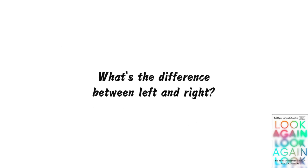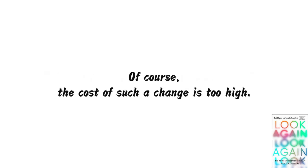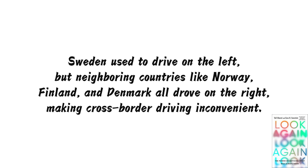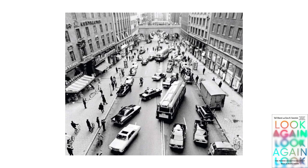Why not unify and have all countries drive on the right side? Of course, the cost of such a change is too high — but such a change has indeed happened before. Sweden used to drive on the left, but neighboring countries like Norway, Finland, and Denmark all drove on the right, making cross-border driving inconvenient. Sweden decided to endure short-term pain for long-term gain. At 4:50 a.m. on September 3, 1967, all traffic stopped nationwide — no matter what vehicle, everything came to a halt — and then switched to the other side of the road, adopting right-side driving from then on.